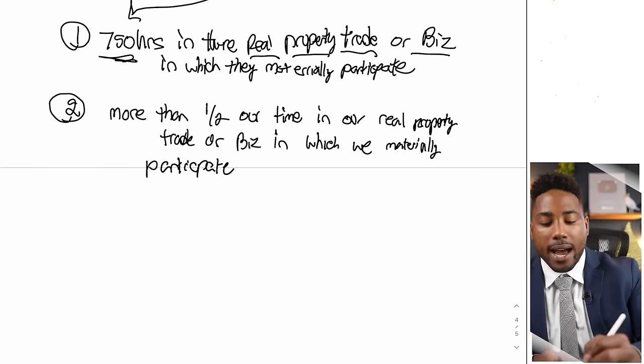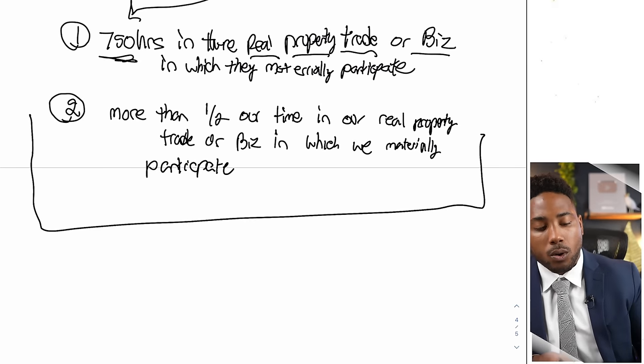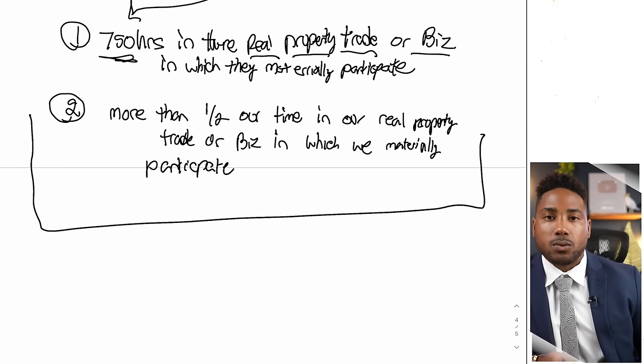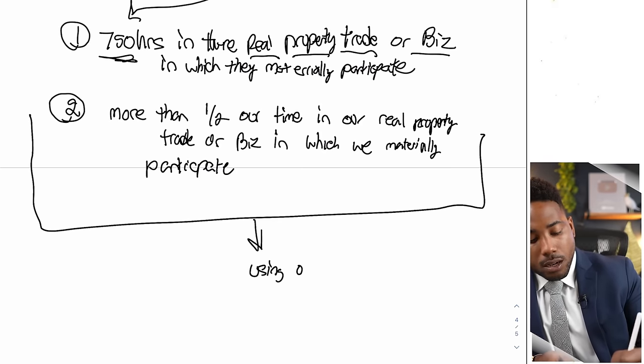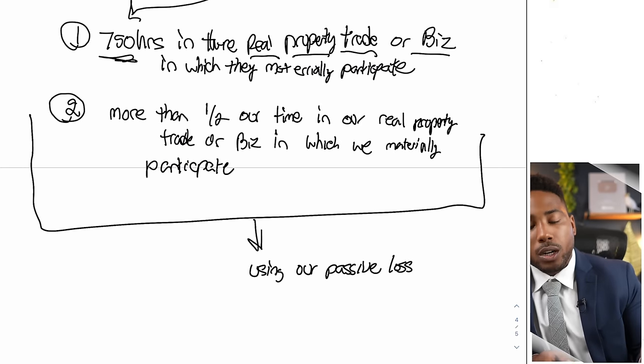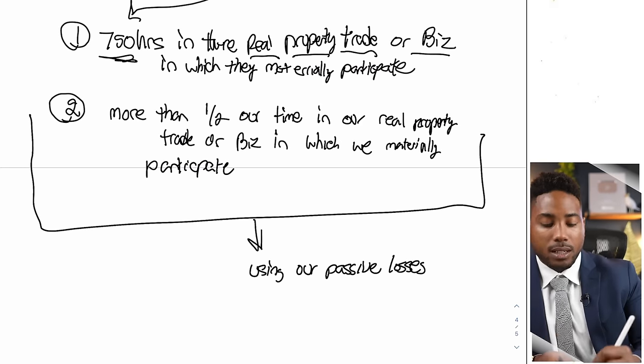Now, for taxpayers who have a spouse, it can be very easy to qualify your spouse. If one spouse is working from home or not currently working — maybe taking care of children — that spouse can qualify for these two tests to allow you to use your passive losses. That's the whole reason we go down this road: we want to be able to use our passive losses.